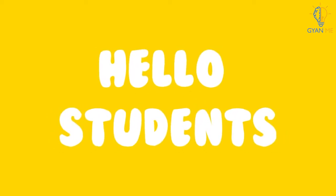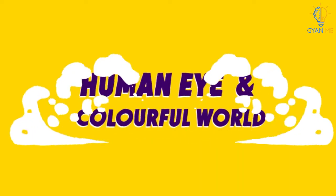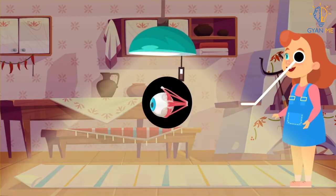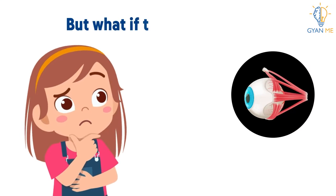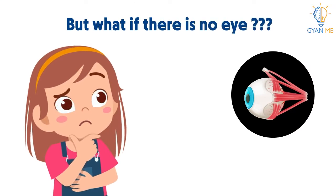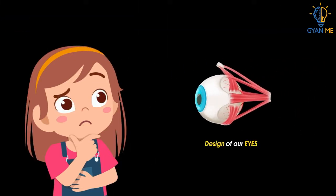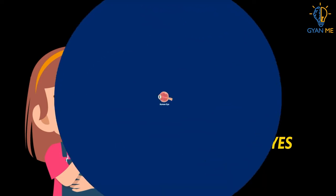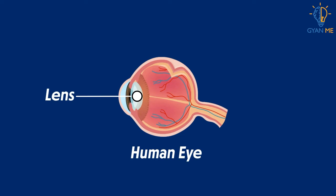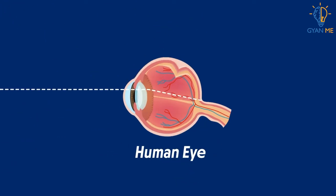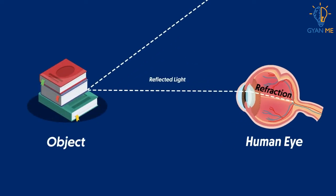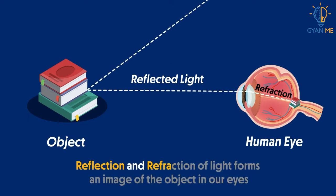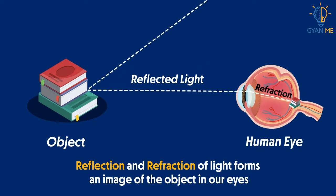Hello students, today we will discuss a new chapter which is the human eye and the colourful world. Our eyes use light and enable us to see the objects and scenes around us. Have you ever wondered about the design of our eyes which makes us see this beautiful world? Our eyes have lenses that refract the rays of light coming from outside after their reflection by the objects. This reflection and refraction of light forms an image of the object in our eyes, which is why we see objects around us.